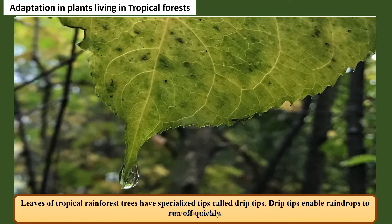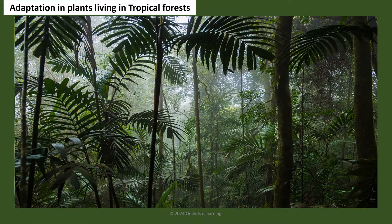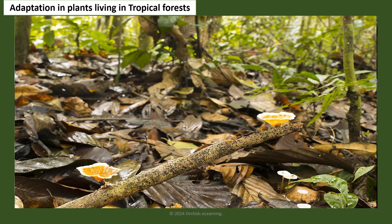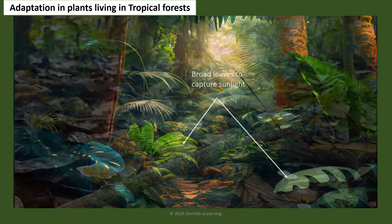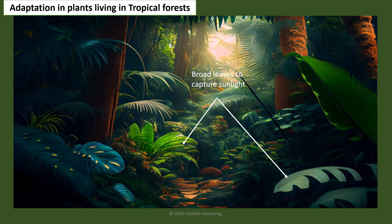In tropical rainforest plants, leaves have specialized tips called drip tips, which enable raindrops to run off quickly. Due to the dense vegetation of rainforests, very little light reaches the forest floor. Plants growing in lower levels have big leaves to absorb more sunlight.